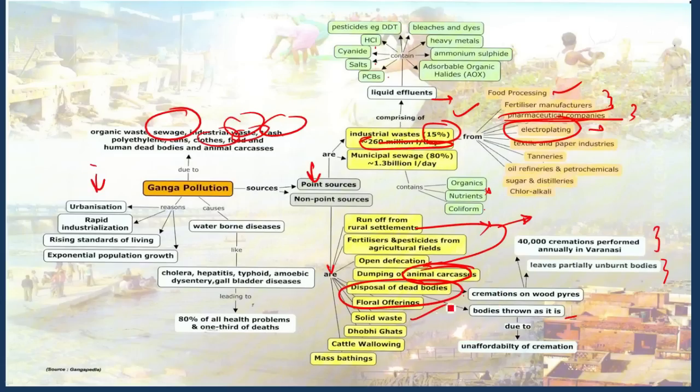Solid waste is also added. Dhobi ghats are there all along the course of the river Ganga in major cities. They add soap waste and other things to the river. Cattle wallowing and mass bathing, these are all the non-point sources to the Ganga River. Majorly, point sources include industrial waste and municipal sewage waste. Non-point sources include runoff from the rural settlements, fertilizers and pesticides from the agriculture fields, open defecation and other related issues.